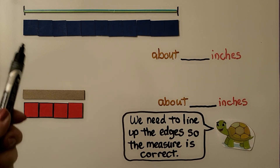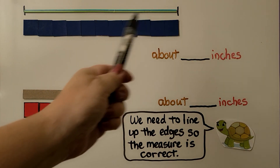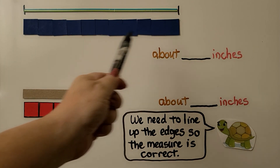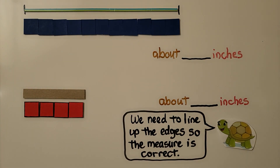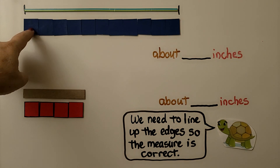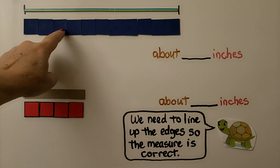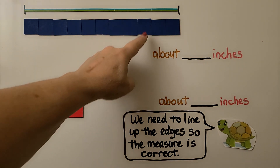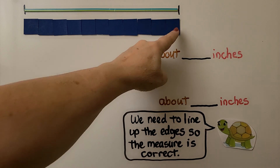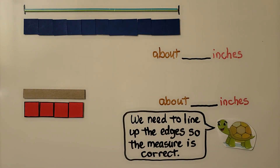To measure this stick we lined our color tiles up neatly side by side with no gaps or overlaps, and we count them: one, two, three, four, five, six, seven, eight, nine, ten, eleven color tiles. That means it's about eleven inches.